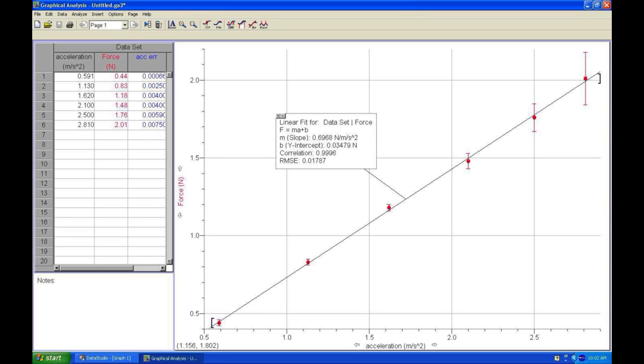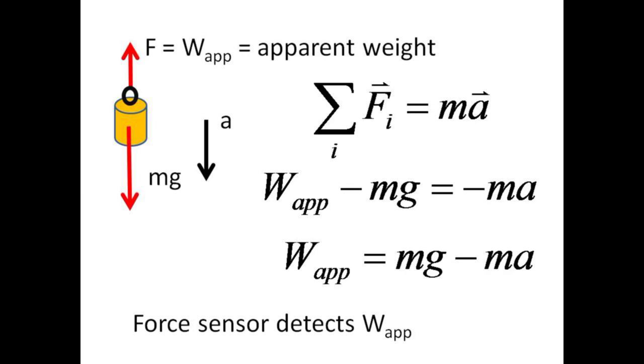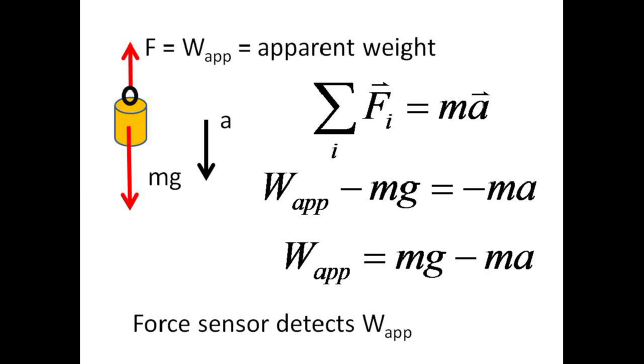Another object undergoing the same magnitude of acceleration as the cart, but in the downward vertical direction, is the hanging accelerating mass. A free body diagram drawn on the hanging mass, with little m representing its mass, shows the upward tension in the string being overcome by the downward force of gravity. The tension in the string is the same as the apparent weight of the hanging mass.